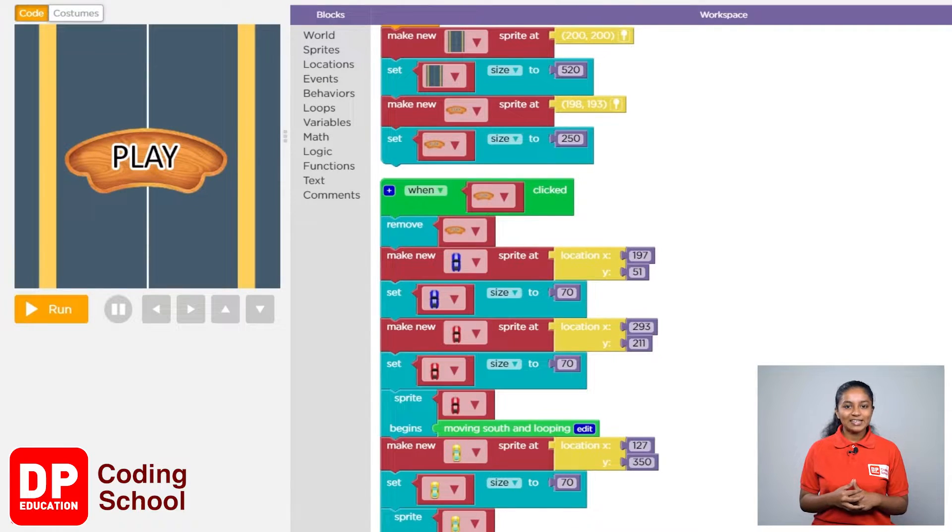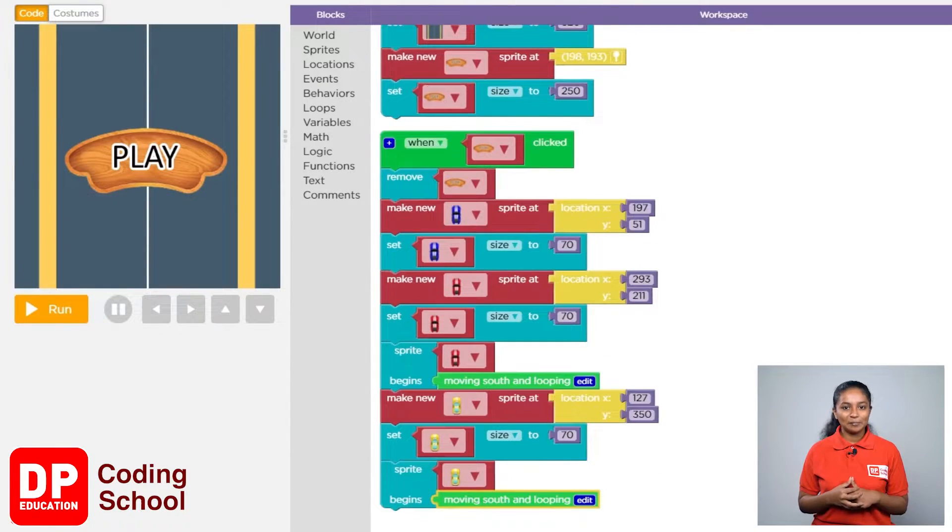In the same way, let's create the petrol can and place it at X equals 198 and Y equals 346.